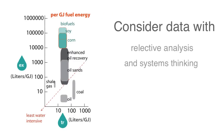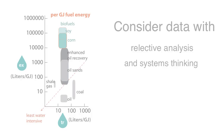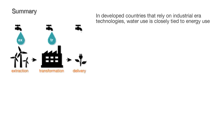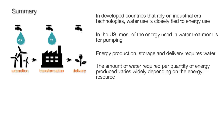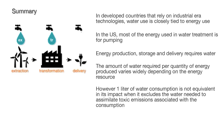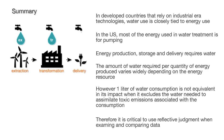These data illustrate that one must use reflective judgment and systems thinking when considering numbers — the numbers only tell part of the story. The data show the connection between energy production and water use, but they only tell part of the story since they neglect the water needed to deal with emissions from the extraction and transformation processes. In developed countries that rely on industrial-era technologies, water use is closely tied to energy use. Energy production, storage, and delivery requires water, and the amount required per quantity of energy produced varies widely depending on the energy resource. However, one liter of water consumption is not equivalent in its impact when it excludes the water needed to assimilate toxic emissions associated with the consumption. Therefore, it's critical to use reflective judgment when examining and comparing data.